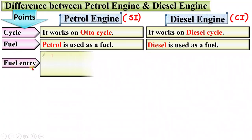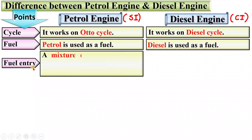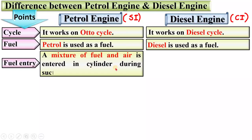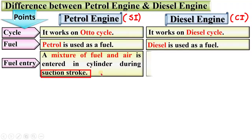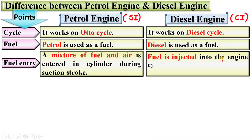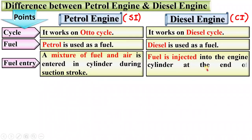Next, the third point is fuel entry. In a petrol engine, a mixture of fuel and air is entered into the cylinder during the suction stroke. Whereas in case of diesel engine, fuel is injected into the engine cylinder at the end of the compression stroke.